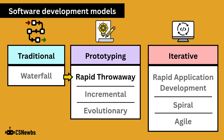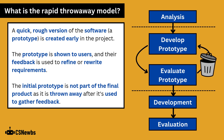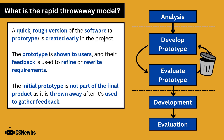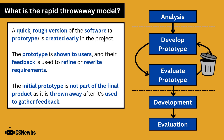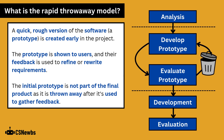The rapid throwaway prototype model is an example of software development focusing on the use of prototypes. A quick rough version of the software, which is a prototype, is created early in the project. This prototype is shown to users and their feedback is used to refine or rewrite requirements. The initial prototype is not part of the final product, as it's thrown away after it's used to gather feedback.